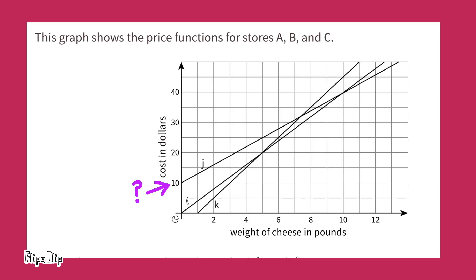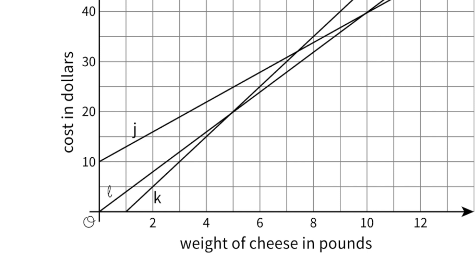When I look at this graph, right away I see a line that starts at zero pounds of cheese at ten dollars, which makes me think this might be Store C — the store that charges a delivery fee of ten dollars. The horizontal axis represents the weight of the cheese in pounds, and the vertical axis represents the cost in dollars. At the bottom left corner is the origin, representing zero pounds of cheese and zero cost.